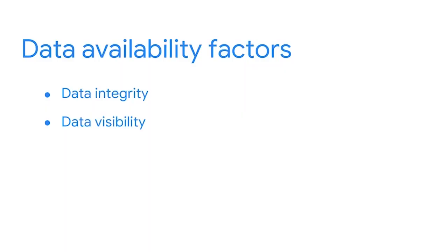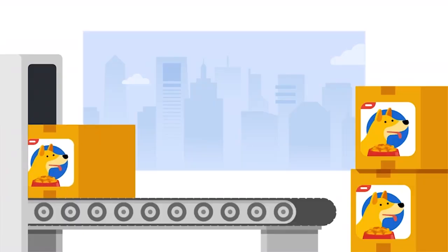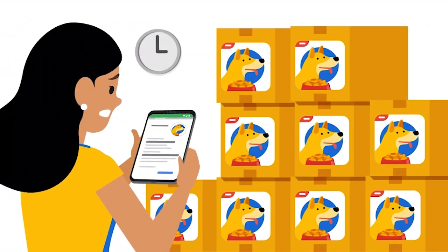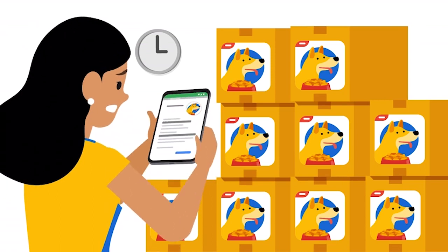The third data availability factor to be aware of is update frequency. Often times BI projects will involve multiple data sources. It's very common for disparate sources to refresh at different times, such as weekly versus monthly. Let's say a BI professional works for a pet supply manufacturer based in Brazil and they analyze product sales volume by city. If a retail partner moves from Rio de Janeiro to Sao Paulo in the middle of July, all of that month's sales would fall under Rio simply because the partner's address hasn't been updated yet in the BI system. So either the retailer's data needs to refresh sooner to match sales data, or the manufacturer should look at all data on a monthly basis. This is why it's important for the BI professional to understand how the update frequency of different data sources can affect insights.